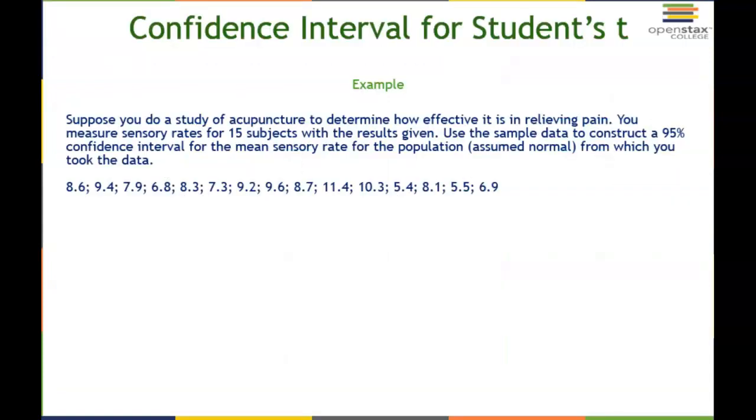The confidence interval for a student's t distribution isn't calculated far too differently than what we've calculated in the previous lesson. Suppose we do a study of acupuncture to determine how effective it is in relieving pain. We measure sensory rates for 15 subjects with the results given. We only have 15 subjects, and we were not given the population mean nor the population standard deviation. Because of that, this is going to use a student's t distribution. We do have the raw data: 8.6, 9.4, and so on.